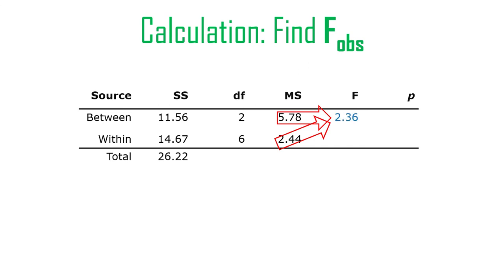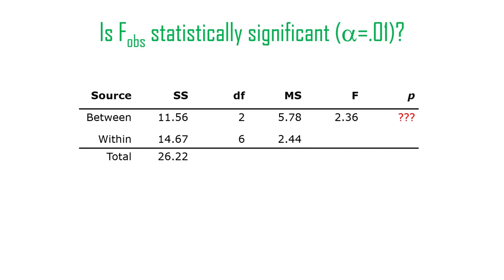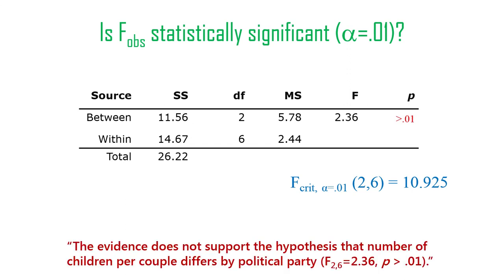We divide 5.78 by 2.44 to find our observed F value: 2.36. Is it statistically significant? No, it totally is not. F critical is 10.925, and 2.36 isn't even close. Remember, there can never be a negative F value — it's always one-tailed, everything goes to the right, so bigger is always better with F. So we conclude: the evidence does not support the hypothesis that the number of children per couple differs by political party. F with 2 and 6 degrees of freedom equals 2.36, p is greater than 0.01. Next time we'll actually do some calculations.